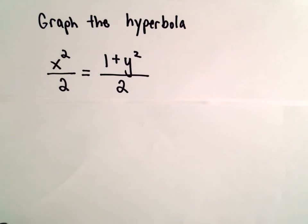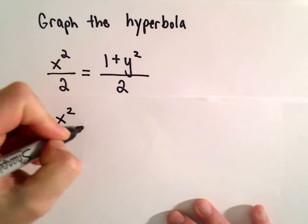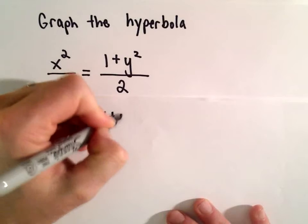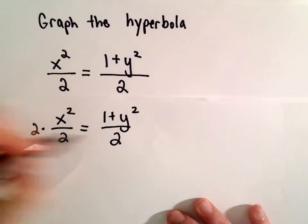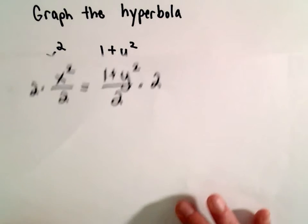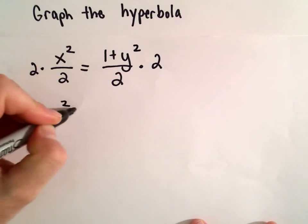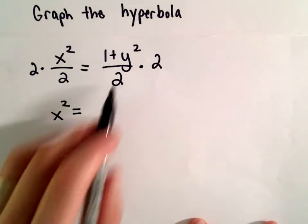And what I'm going to do is write this in a more standard form. So the first thing I would do is I'm just going to multiply both sides by 2 just to get rid of those denominators. To me, it just kind of clutters up the problem and maybe confuses things a little bit. So the 2s will cancel out, leave us with x squared on the left.